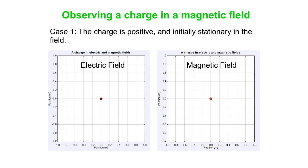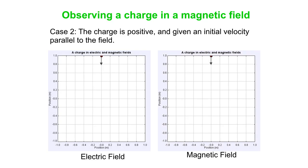Let's say we have a positive charge that's initially stationary. If we let it go from rest in an electric field that points down, the charge accelerates in the direction of the field — it's a positive charge, remember. If we do the same thing in a magnetic field, not a thing happens.